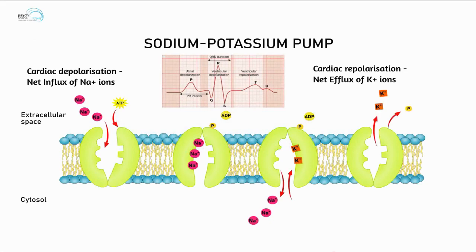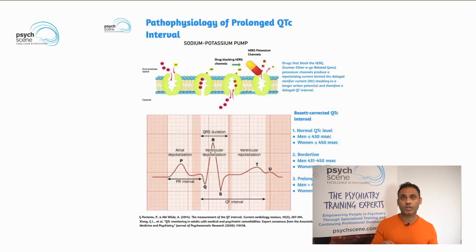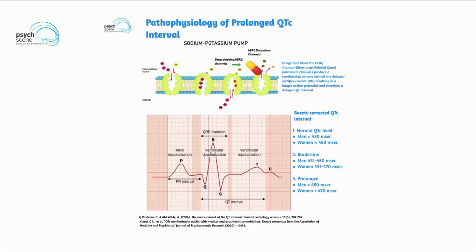The QTc interval is essentially a combination of cardiac depolarization and cardiac repolarization. Cardiac depolarization is due to a net influx of sodium ions, whilst cardiac repolarization is due to a net efflux of potassium ions. Medications that block the HERG — the human ether-a-go-go related gene of the potassium channel — produce a repolarizing current termed the delayed rectifier current, resulting in a longer action potential and therefore a prolonged QT interval.